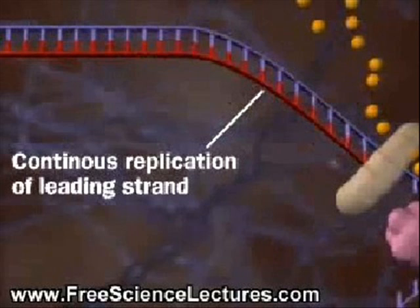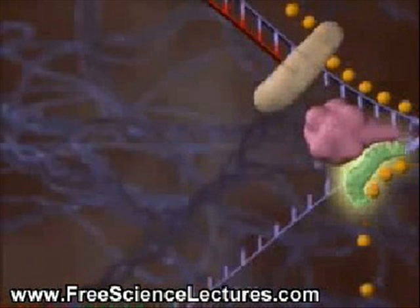However, if we look at the other strand of DNA at the bottom, that's not the same story, and that's all because of the anti-parallel nature of DNA. Because DNA polymerase 3 can only move in that one direction, it can't move towards the replication fork on the bottom strand — it actually has to move away from the helicase. That's where things get a little bit tricky. The bottom strand, where DNA polymerase has to move away from the replication fork, we call the lagging strand, and it's the most difficult for DNA replication to take place on.